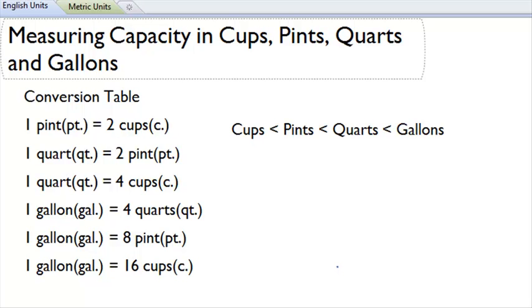As you can see in the conversion table, one pint is made up of two cups and one quart is made up of two pints. This means that one quart is equal to four cups since there are two cups in a pint and two pints in a quart.